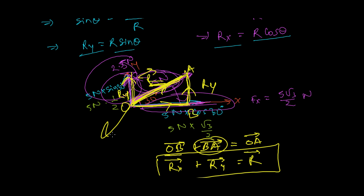If we had 3D, we would also add the z-component RZ. But we are learning 2D first, and we'll learn 3D later. I hope you understand. If you have any questions, please feel free to comment below this video, and don't forget to subscribe to the channel.